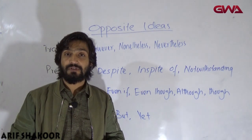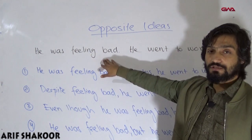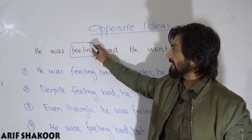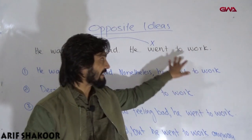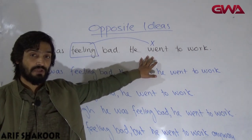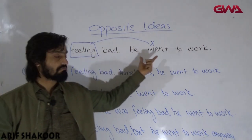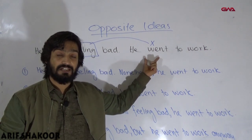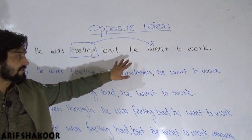Let me show you with an example. Here is a situation: he was feeling bad. Now, if a person feels bad, he should not go to work, but in this case he went to work. He was not feeling good, yet he went to work. These two are called opposite ideas, because when a person feels bad he should not go to work — but in this case he did. This is a contradiction.